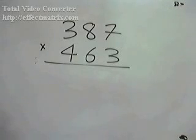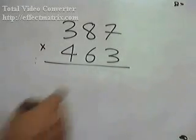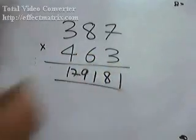In this video, we'll see how to multiply two three-digit numbers in one step. So you can multiply 387 by 463 as fast as that.